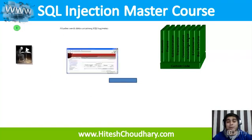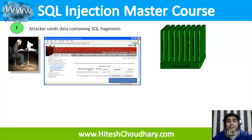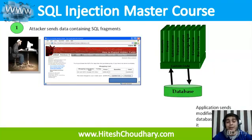First, we have got a custom code. Whenever an attacker sends SQL fragments via the browser or any other means, what actually happens is that the attacker sends some custom SQL fragments that can run on your custom code. This custom code is tricked, and eventually the attacker sends a modified query to get data from the database — queries returning user IDs, passwords, or table names.